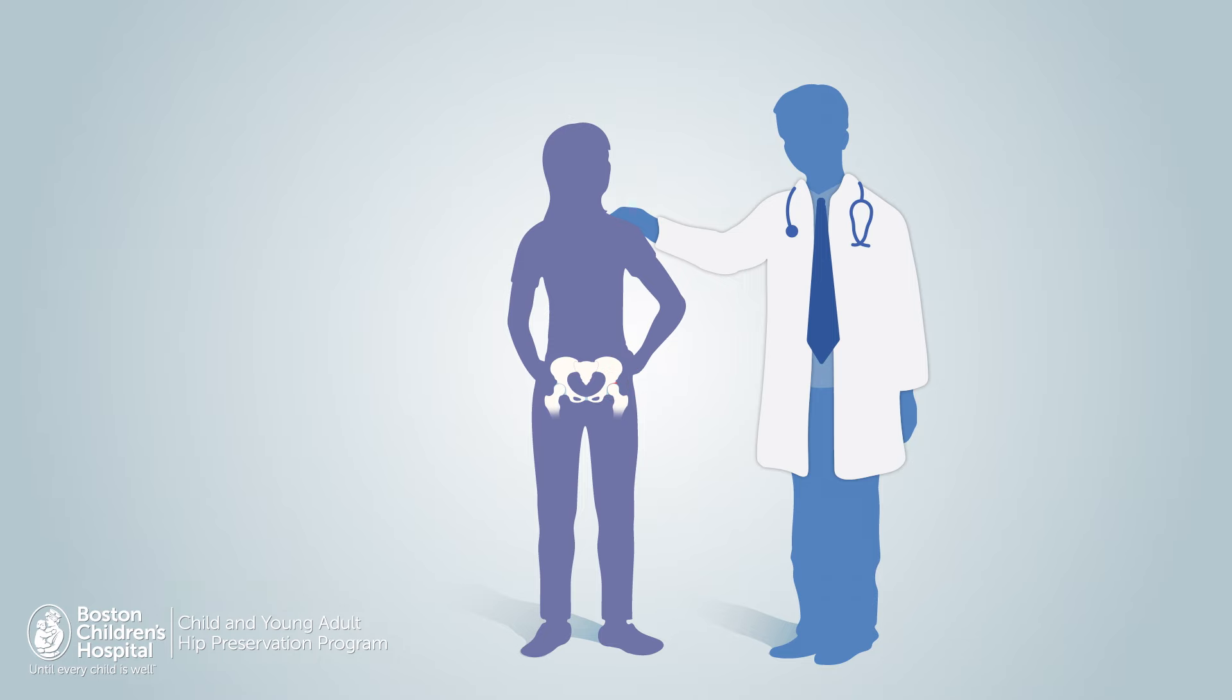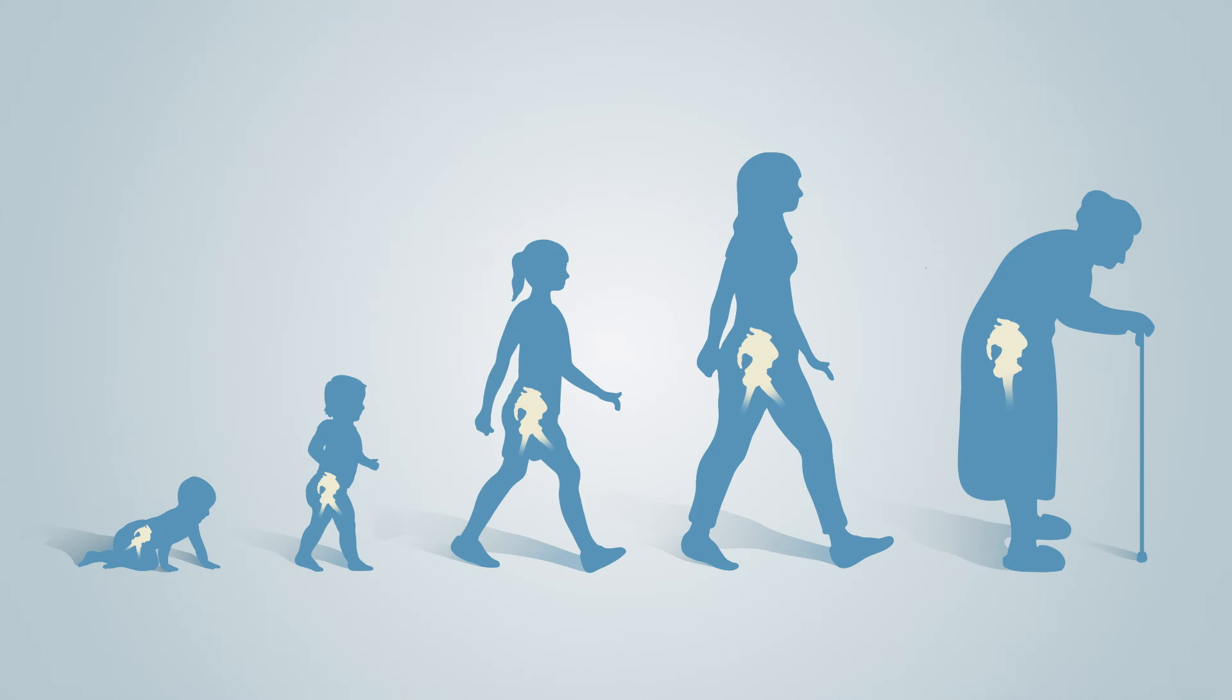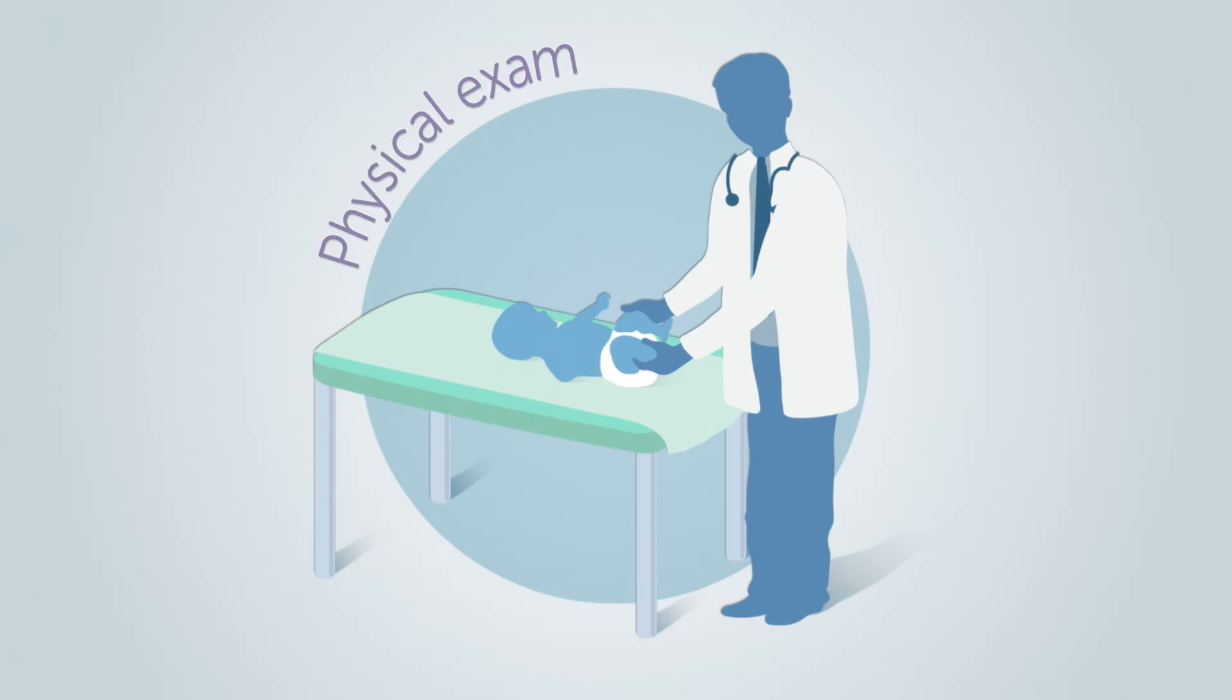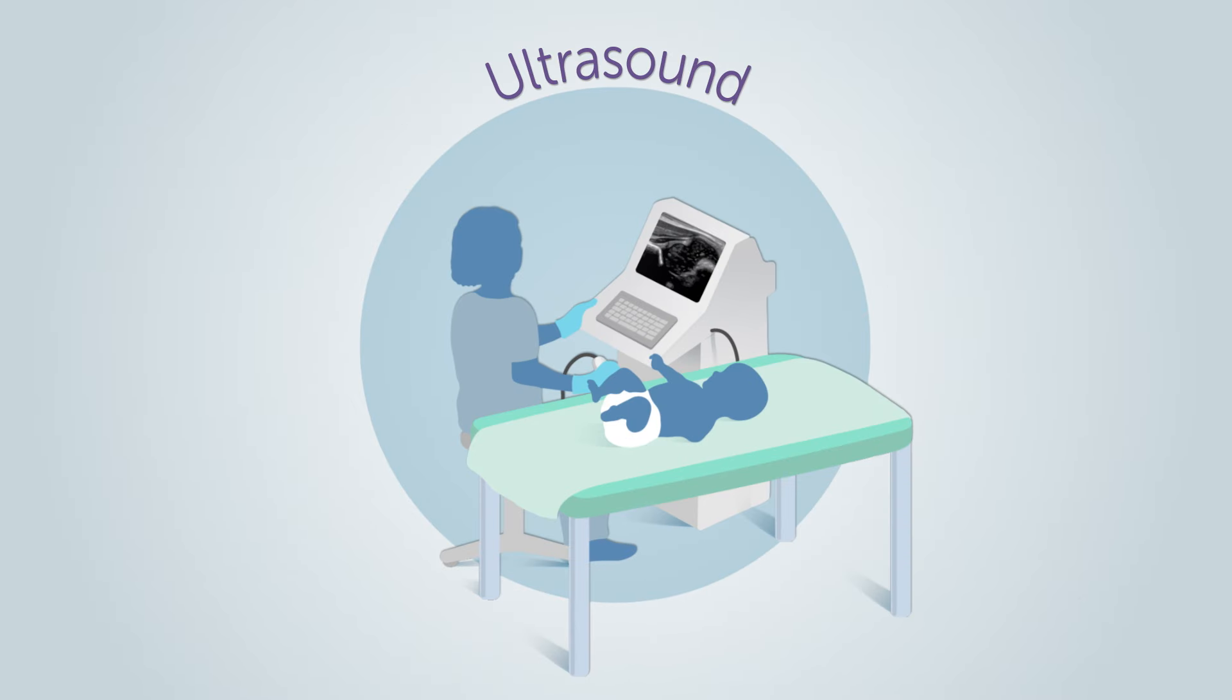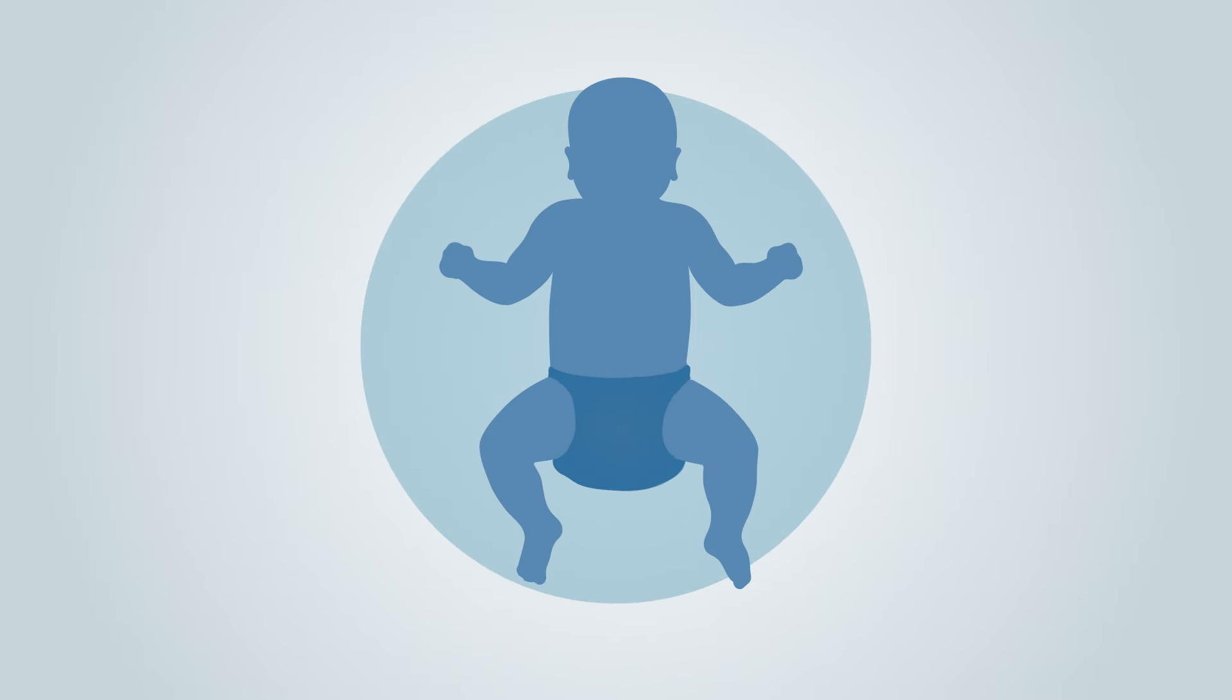The type of treatment depends on what age the hip dysplasia is diagnosed. If diagnosed around birth, hip dysplasia is often detected through a physical exam along with an ultrasound. Since it is caught early, a brace called a Pavlik harness is often sufficient.